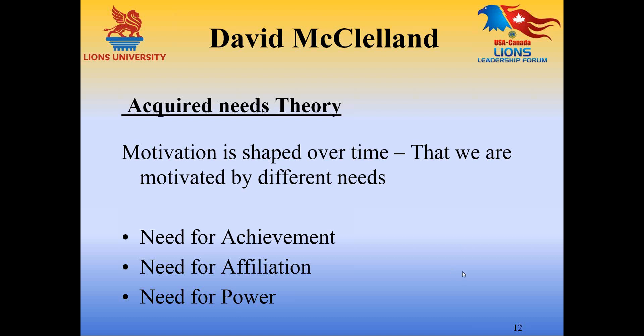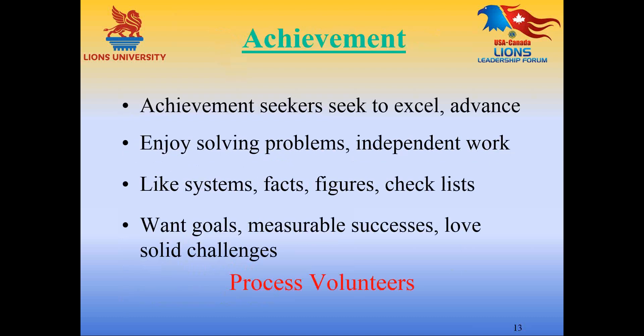Let's look at each area briefly. Starting with the need for achievement — I like to call these the 'process volunteers.' They seek to excel and advance; they enjoy solving problems; they like independent work, systems, facts, figures, checklists; they want goals, measurable successes, and they love solid challenges. Start thinking about what kind of recognition would work for a person like that.